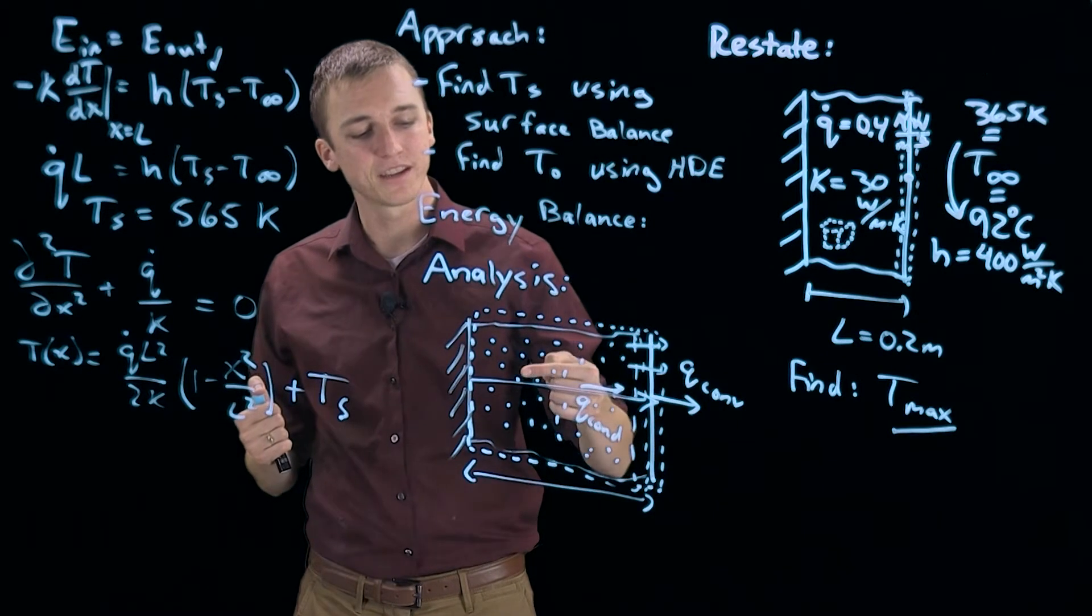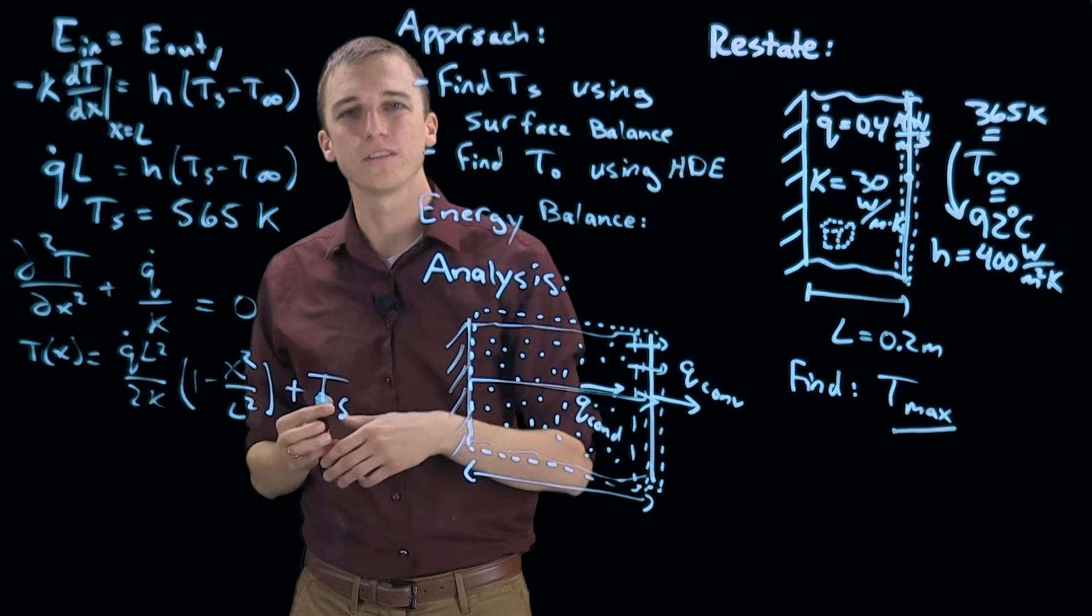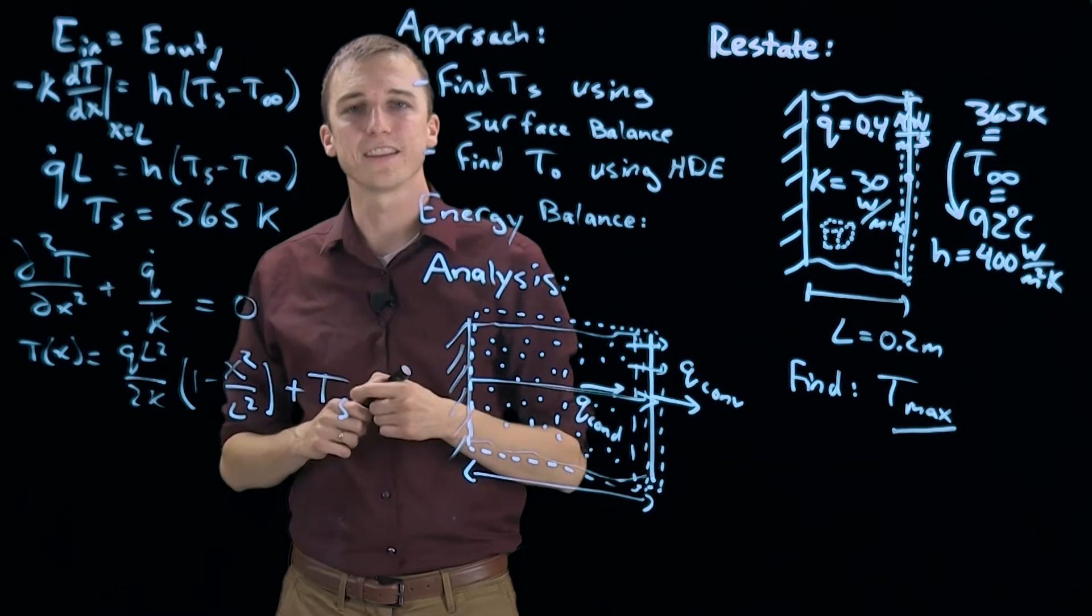So since energy is always flowing this way, the temperature must always be increasing until we hit the insulated wall. In other words, the maximum temperature is at the insulated wall.